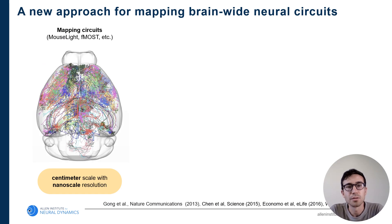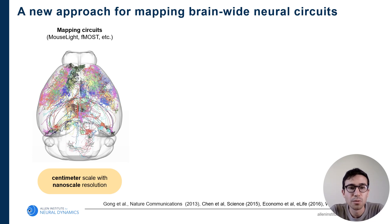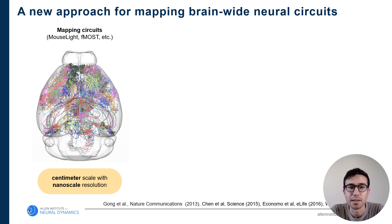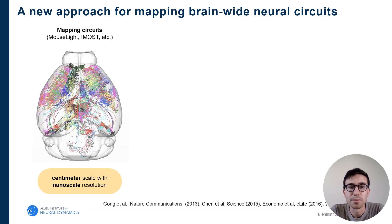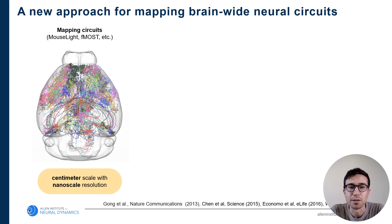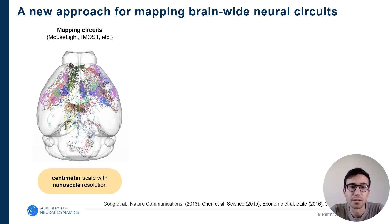We've been developing this new approach with mapping brain-wide neural circuits in mind. This is not a new scientific endeavor — mapping neural circuits has been pursued by several academic groups and institutions, for example the Mouse Light Project as well as the FMOS techniques. From an imaging perspective, this is extremely challenging because with the mouse brain, we need to trace neurons over centimeter scale, as neurons can travel all the way across the brain from one brain region to another. But we really need nanoscale resolution to accurately trace the axons of these neurons, meaning extremely high resolution over a very large volume.